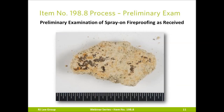Preliminary examination of the as-received fireproofing begins with a binocular microscope examination to check for the presence of layers or lack of homogeneity. If layers are observed, then each layer is treated as a separate sample. The material is then checked for the presence of vermiculite. Finally, the sample is checked for the presence of asbestos bundles.